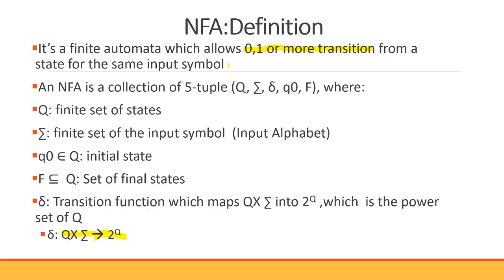In DFA, the transition function delta maps Q cross sigma into another single state Q. So for example, delta of Q0 on input A gives state Q1 — one state in, one state out. This is Q cross sigma mapping to a single Q.